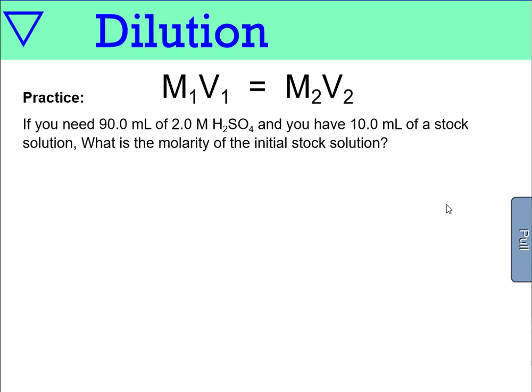All right, final question. If you need 90 mils of 2 molar sulfuric acid and you have 10 milliliters of some stock solution, what was the molarity of the stock solution? So in this one we have our final values. We have 2 molar solution and 90 mils of it is what we want. And you have 10 milliliters of stock solution. Stock just means concentrated or how it's distributed by the supply company. Or maybe you keep a stock solution of a certain molarity. It just means that you've got a large quantity of this solution that you use to dilute from.